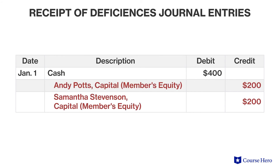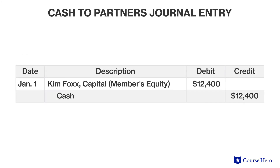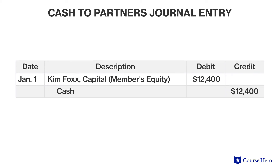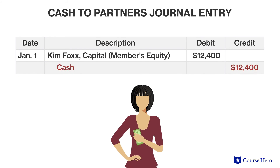The partnership then journalizes the two-hundred dollar payment by Andy and Samantha to make up their capital account deficit. The final journal entry involves the closing of each partner's capital account in exchange for full payment of the remaining assets. In this example, the remaining cash is paid out entirely to Kim to close her capital account.